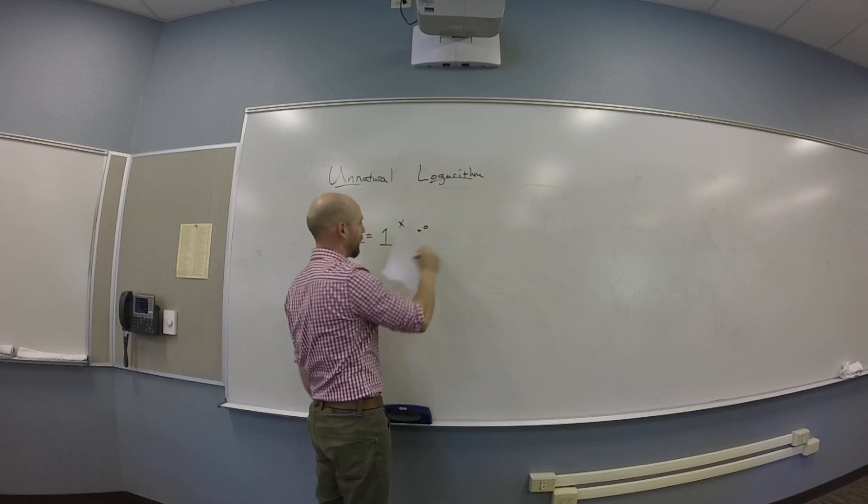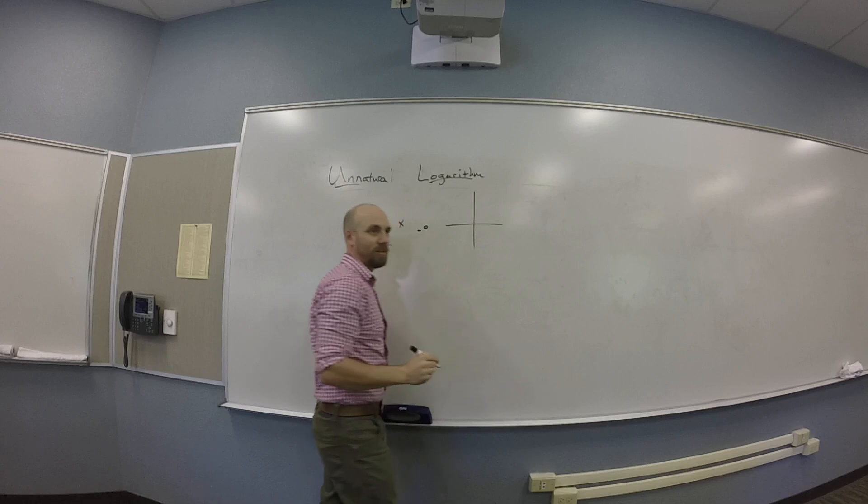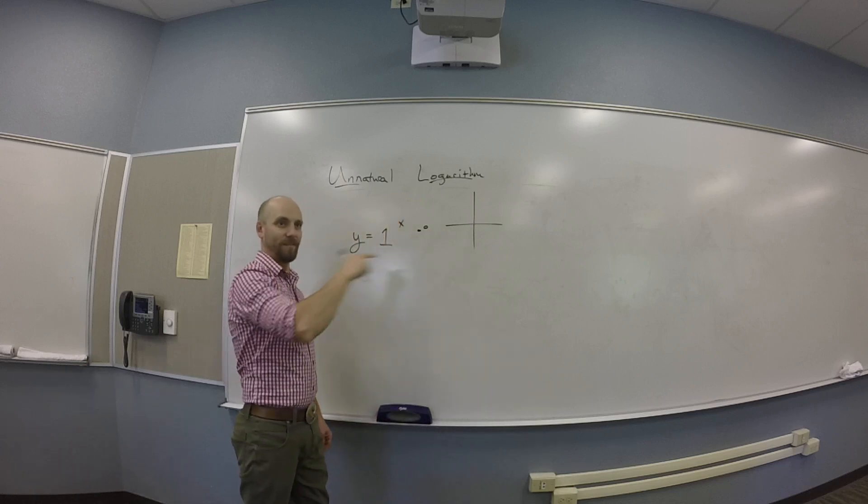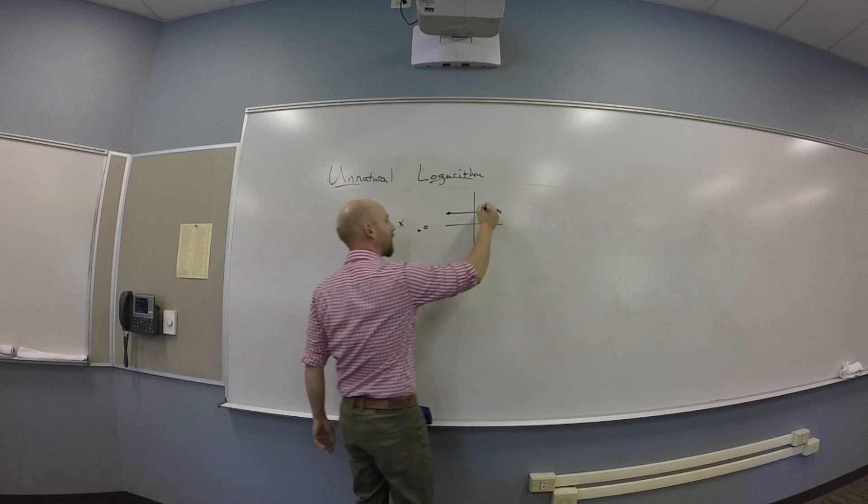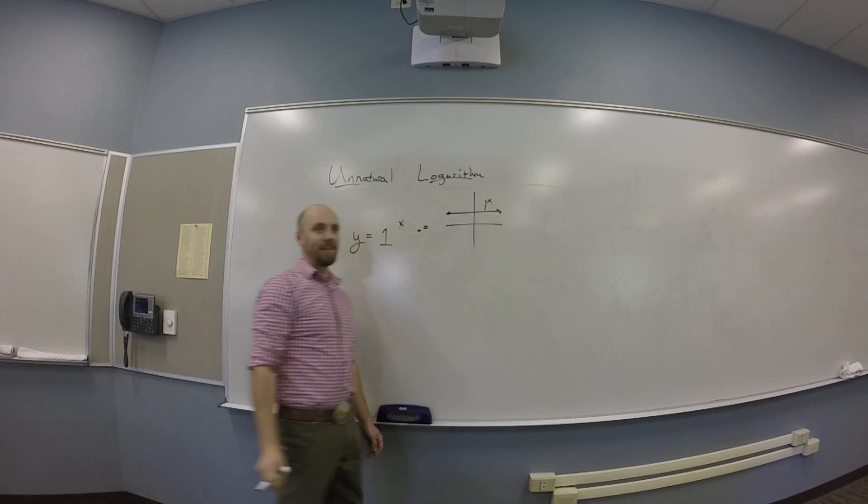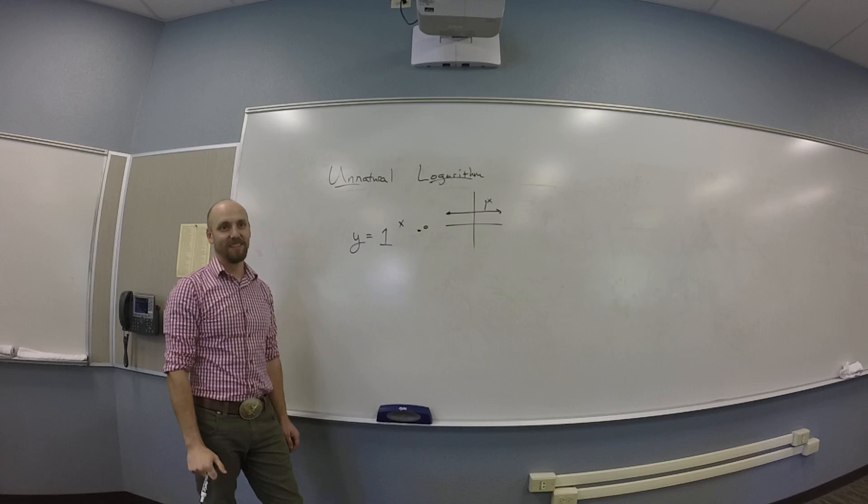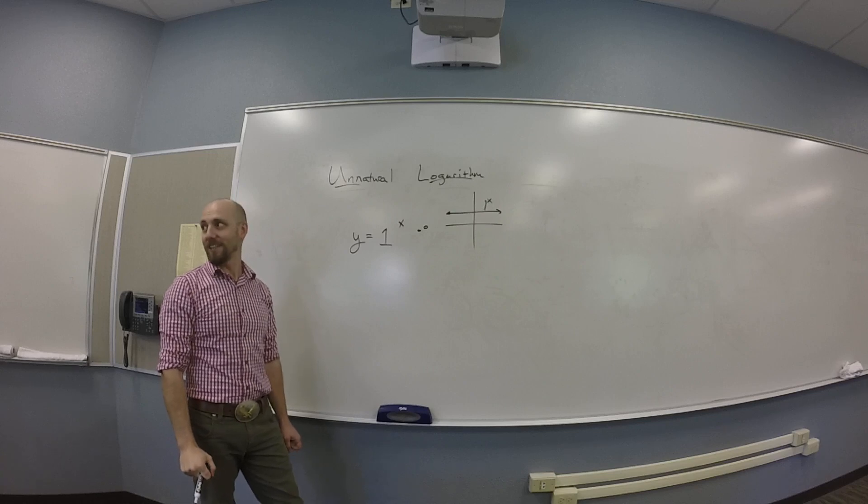So what would this look like? What's the picture for this one? A line - it is itself a horizontal line, right? And thus it fails the horizontal line test.